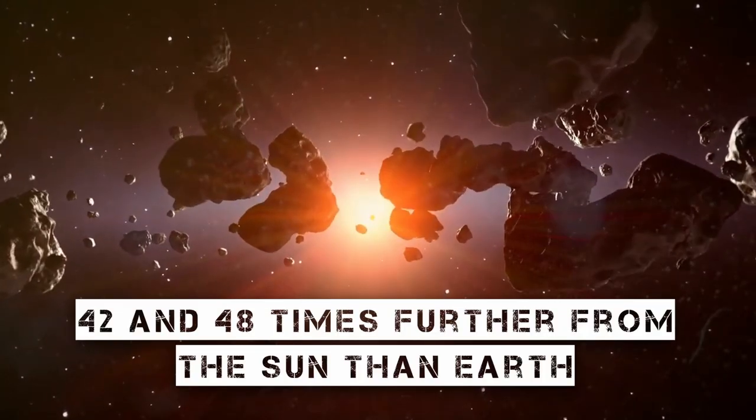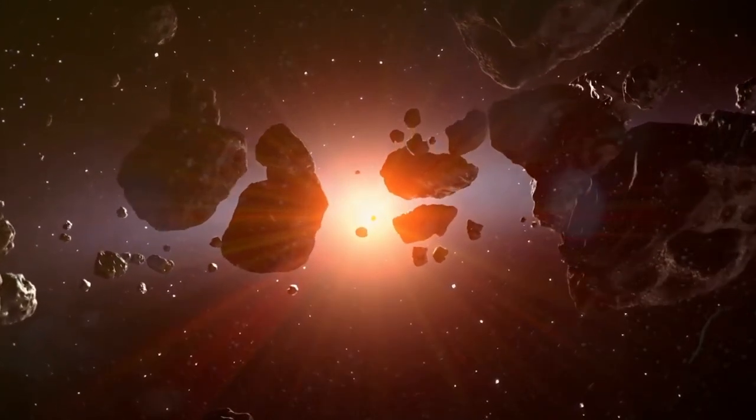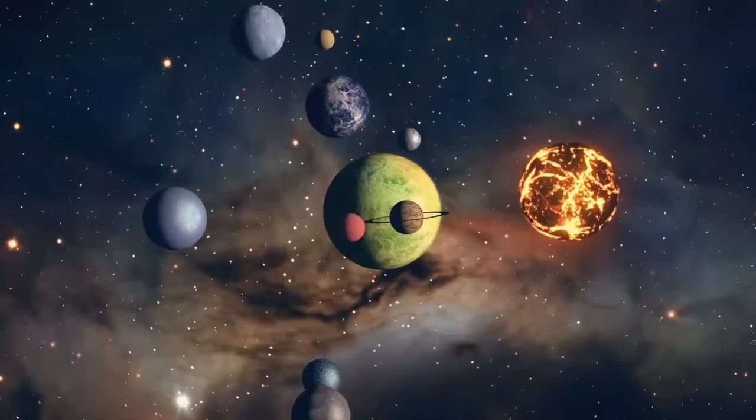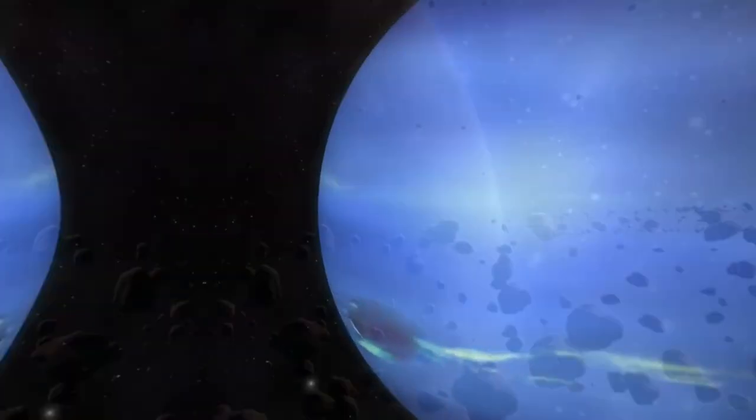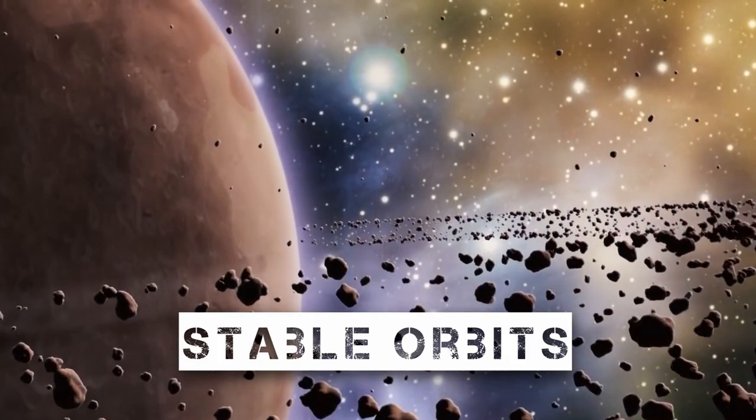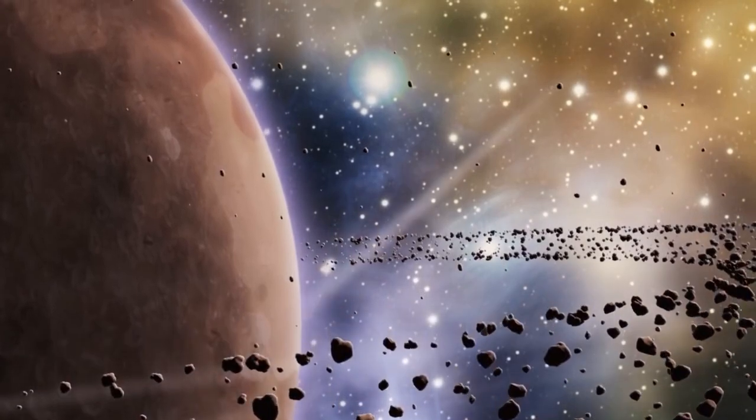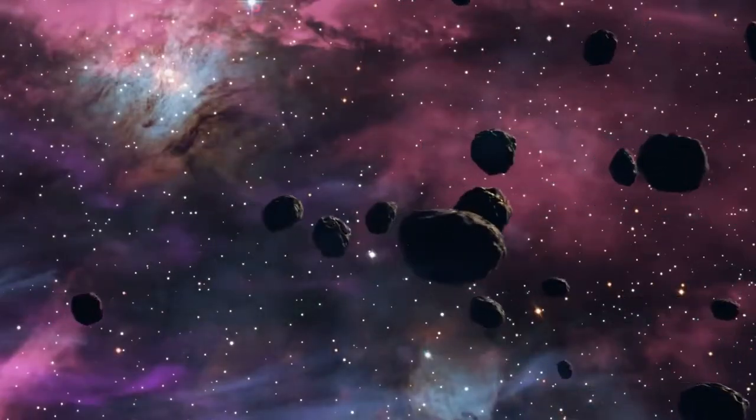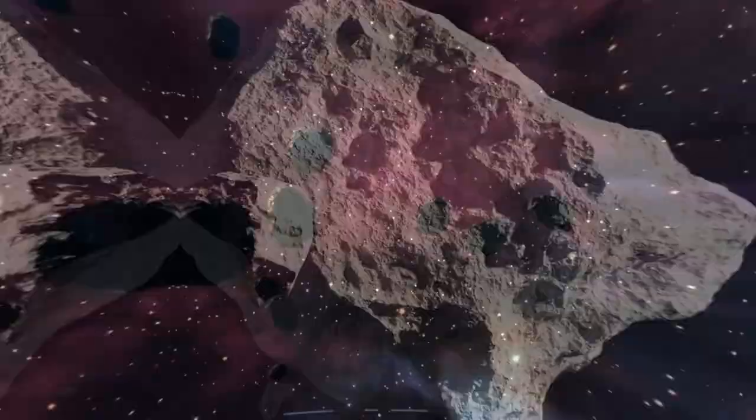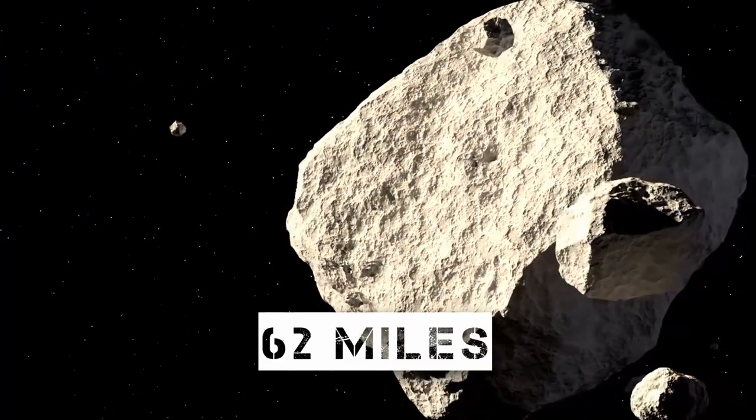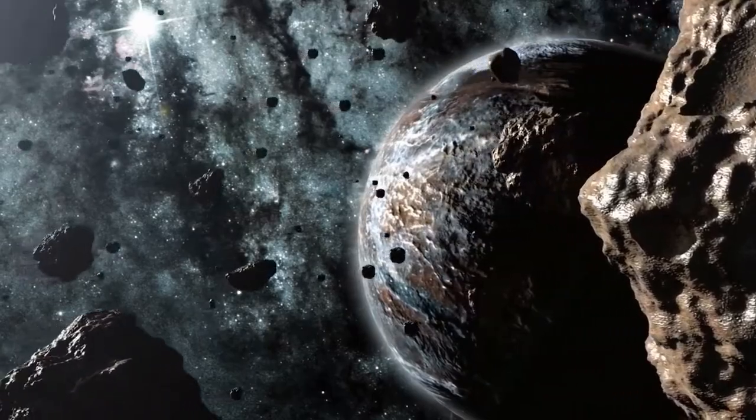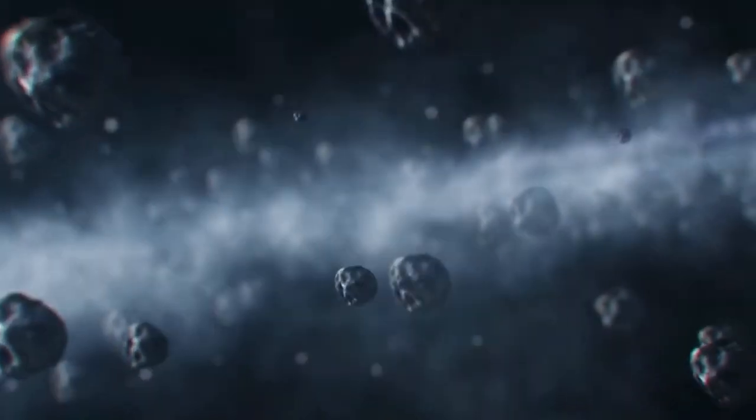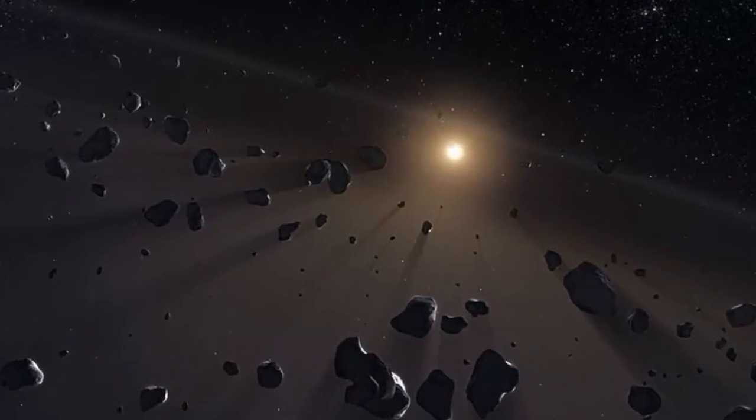Between 42 and 48 times further from the sun than Earth, the Kuiper Belt's densest region can be found. Although certain objects occasionally have their trajectory significantly adjusted when they drift too close to Neptune, most objects in this region have stable orbits. The belt contains trillions of smaller objects, many of which are short period comets, as well as thousands of objects with a diameter of more than 62 miles. The area is also home to several dwarf planets, which are circular bodies that are too massive to be categorized as asteroids but too small to be considered planets.